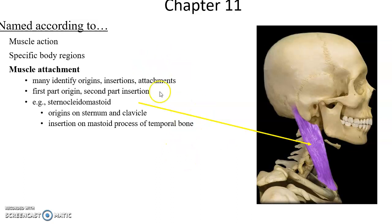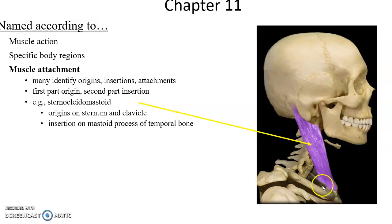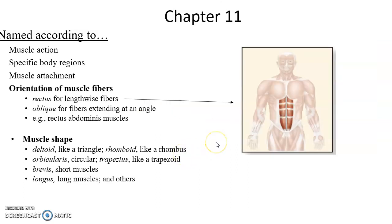Muscles can be named by their attachments — their origins and insertions. Usually the first part of the name is the origin and the second part the insertion. For example, sternocleidomastoid: sterno is attached to the sternum, cleido to the clavicle — those are its origins — and its insertion is the mastoid process of the temporal bone. Muscles can also be named based on the orientation of their fascicles relative to the midline: rectus muscles have fascicles parallel to the midline, while obliques run at an angle.